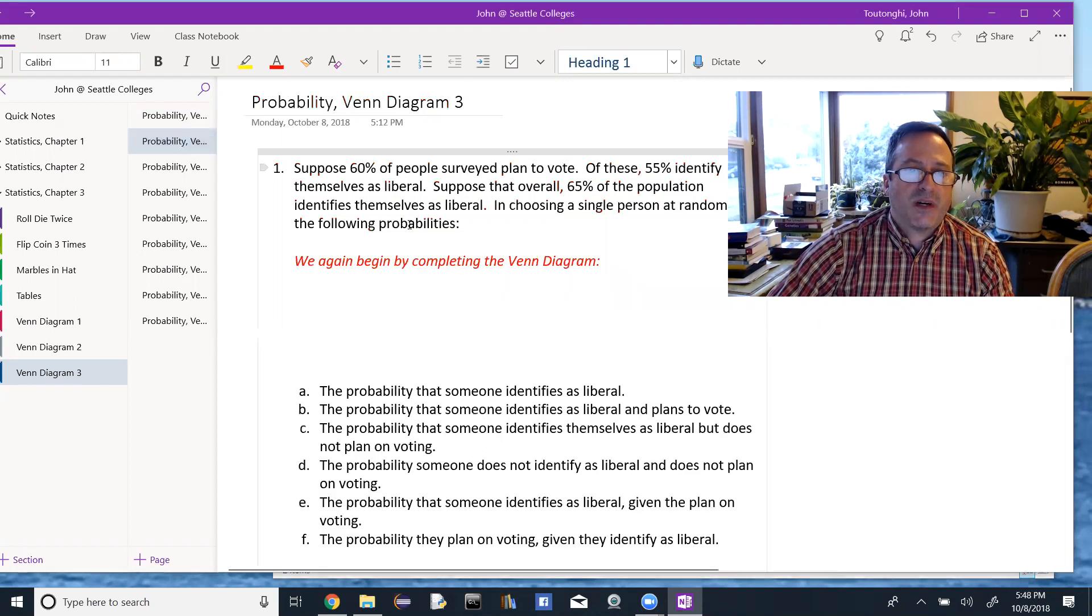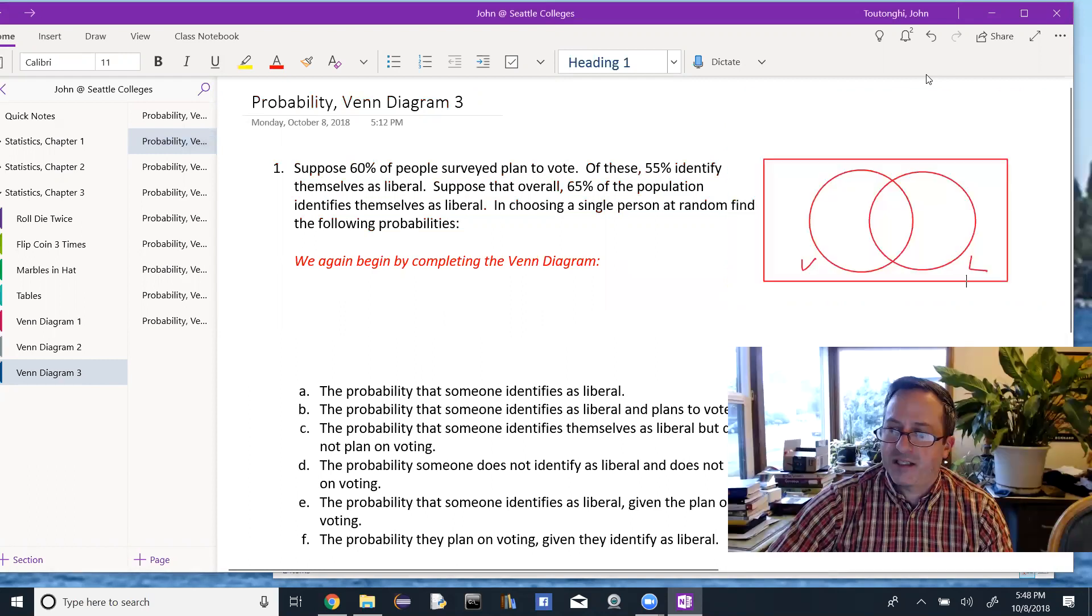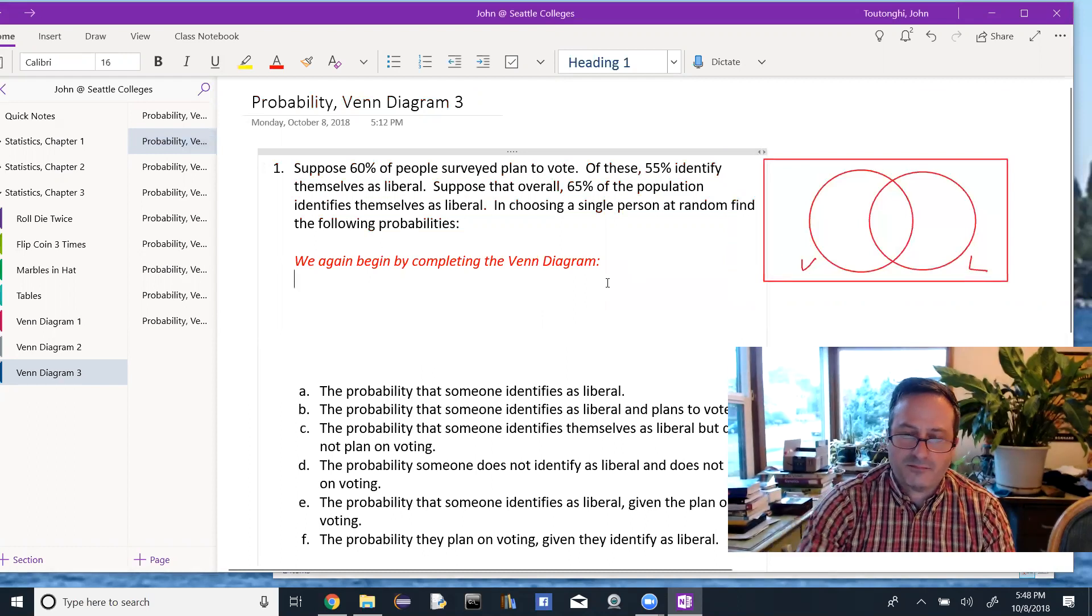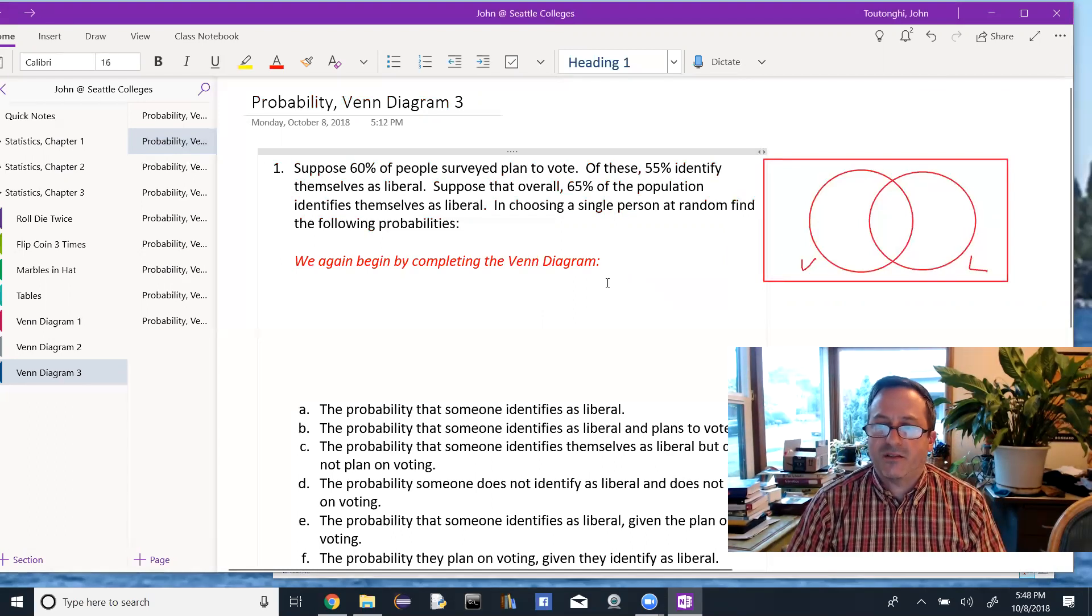So just like the last two problems, I want to start by completing a Venn diagram. Get myself out of the way. The two events here are that you plan to vote and that you identify yourself as liberal.